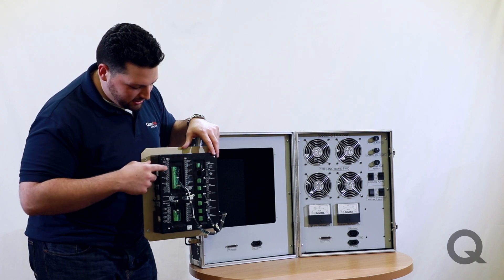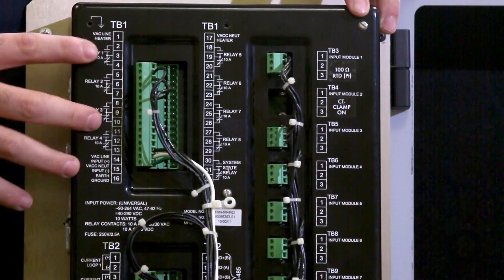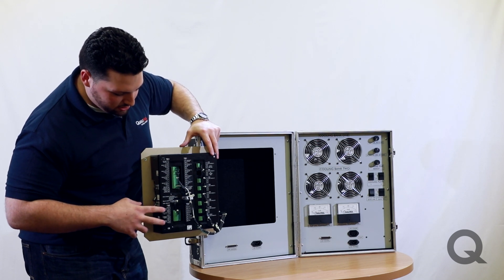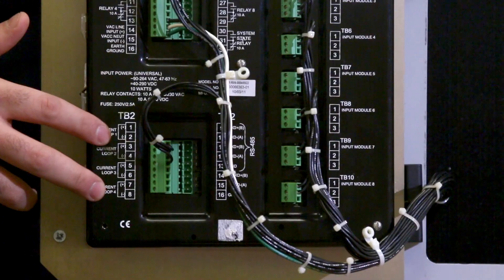Here you can see the eight output relays. These can be wired as you need for alarms and trips. Down here you can see output current loops to monitor certain inputs on the ITM.